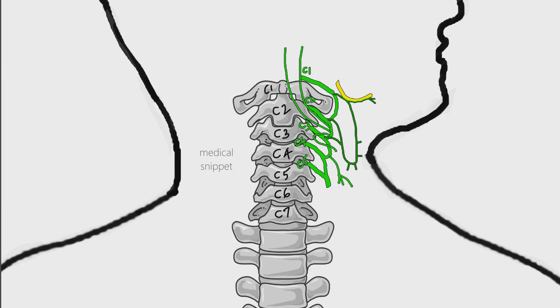Now let's discuss the phrenic nerve. Phrenic nerve originates from the ventral rami of C3, C4, and C5. The main contribution of phrenic nerve is from C4 nerve fibers. It carries both motor and sensory supply to diaphragm.